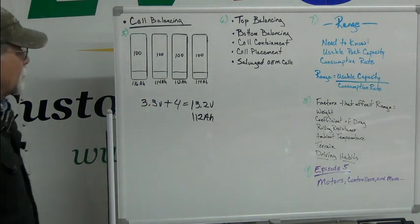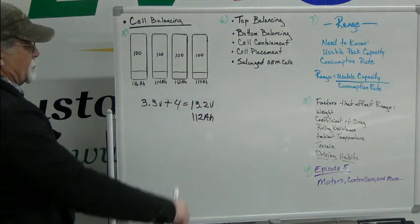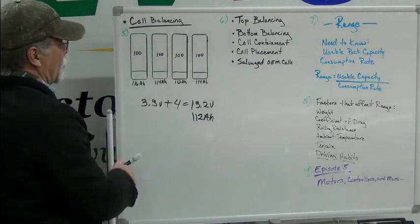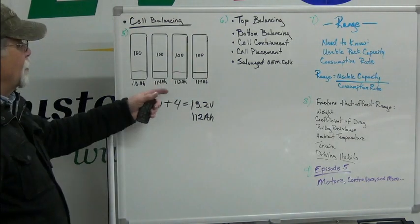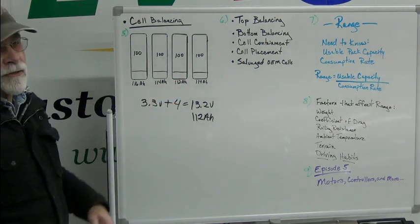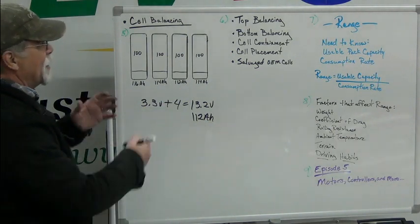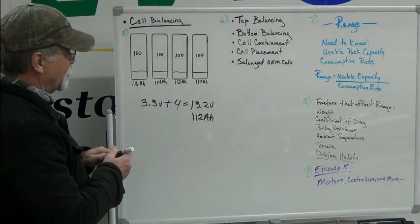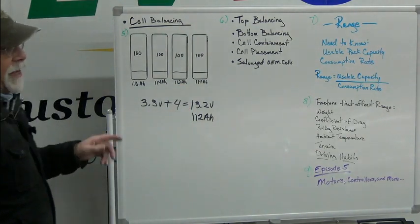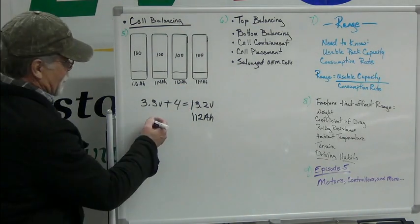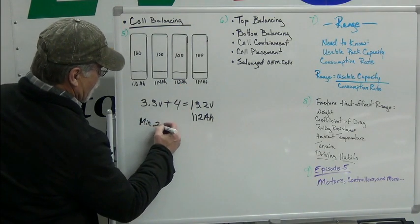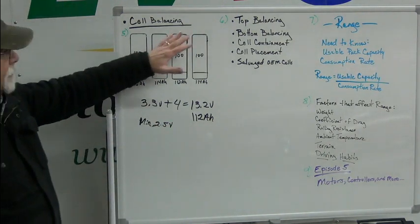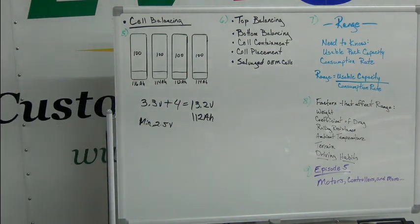So if these cells are top balanced and we're now discharging them, we need to be monitoring all four. In a pack of however many cells, you need to monitor each one. If you have a BMS on it, it's always trying to top balance. What's going to happen is you'll have to shut down before the weakest cell reaches that minimum cell voltage — which, remember, was 2.5 volts. That's a quick look at top balancing.